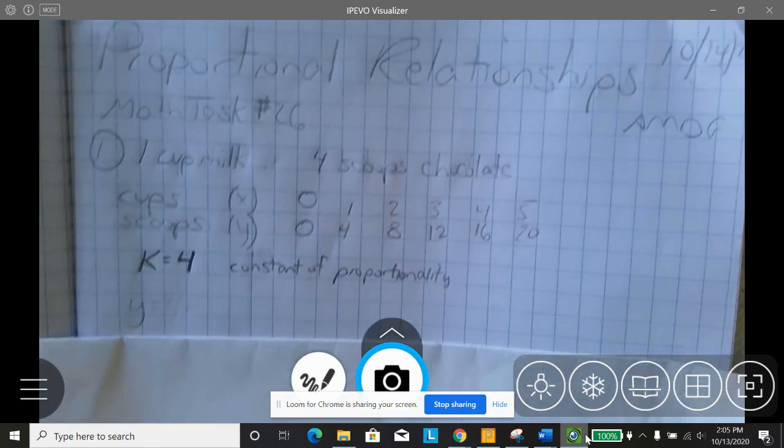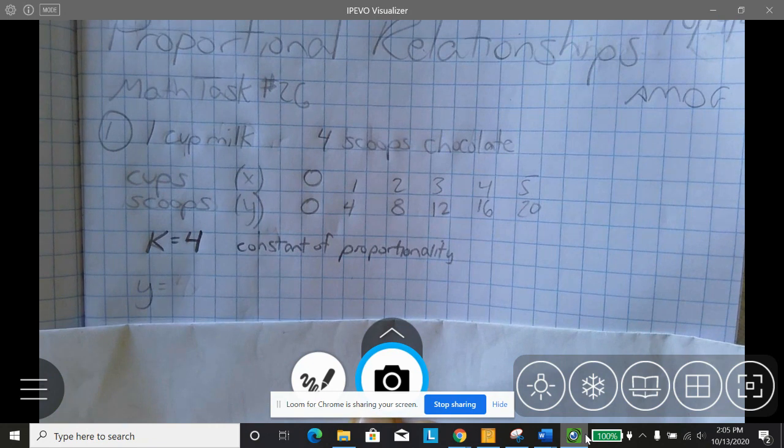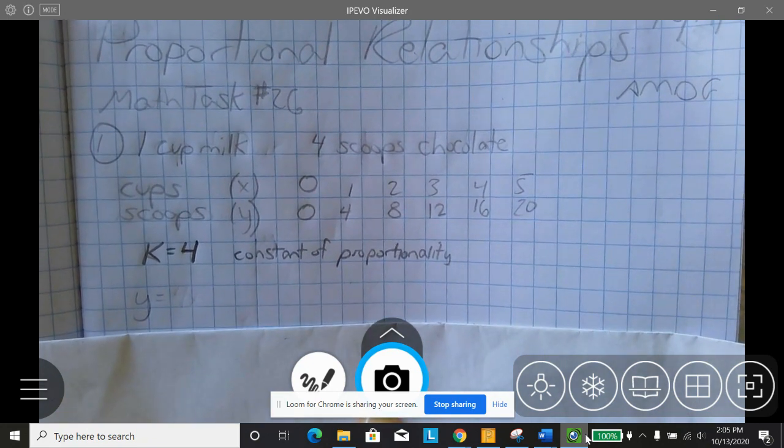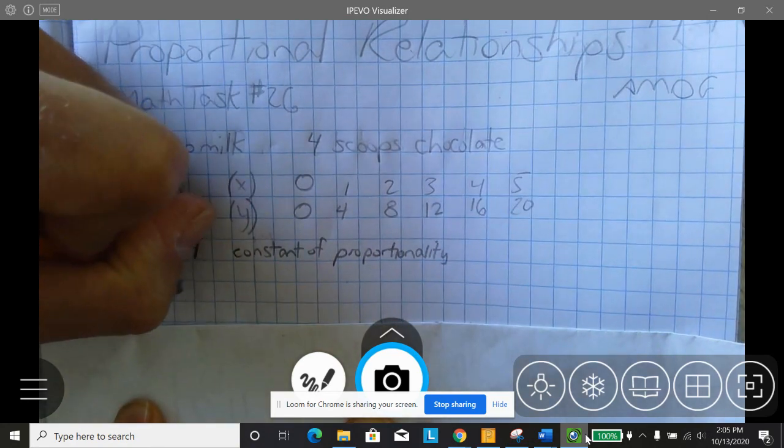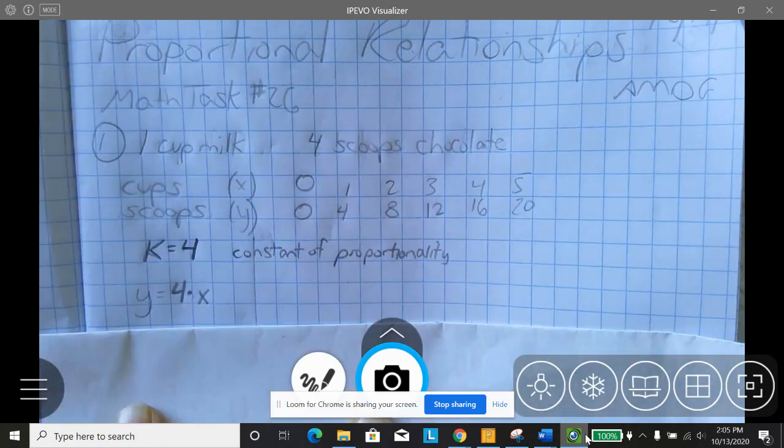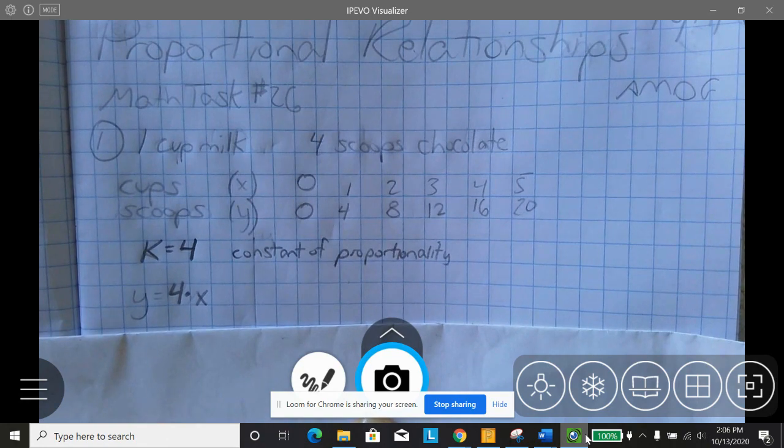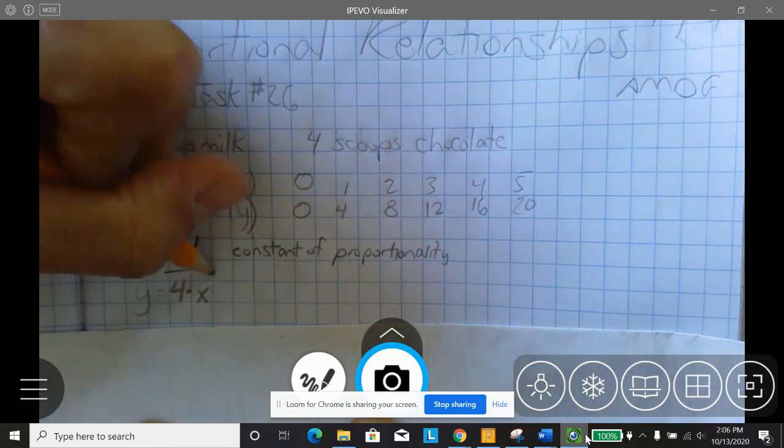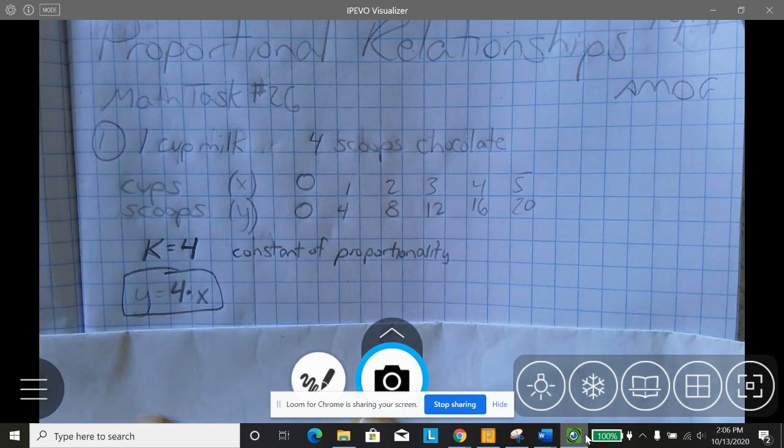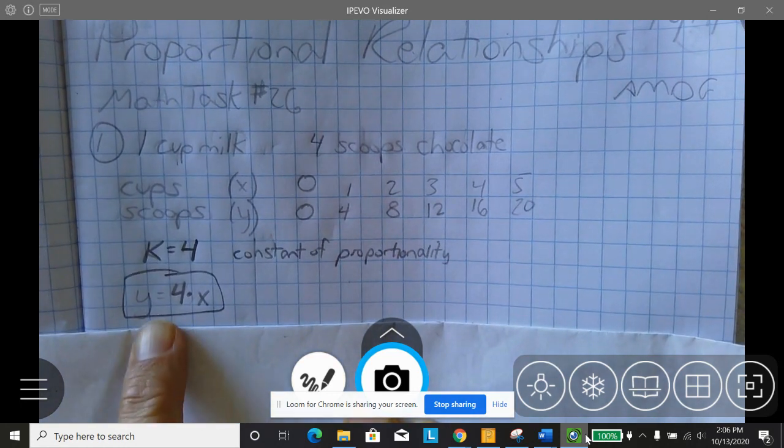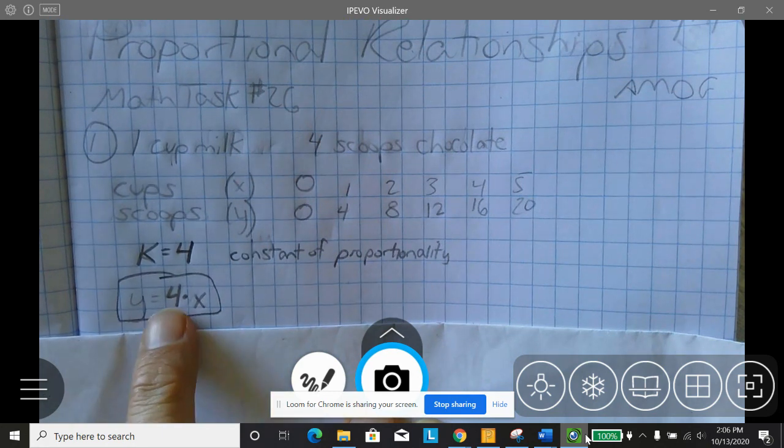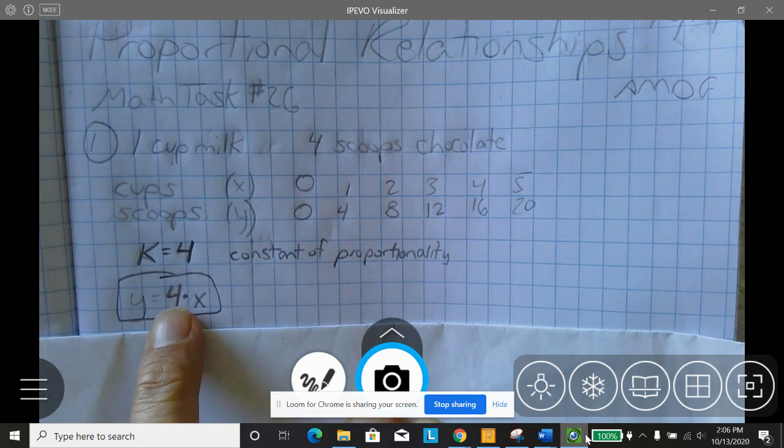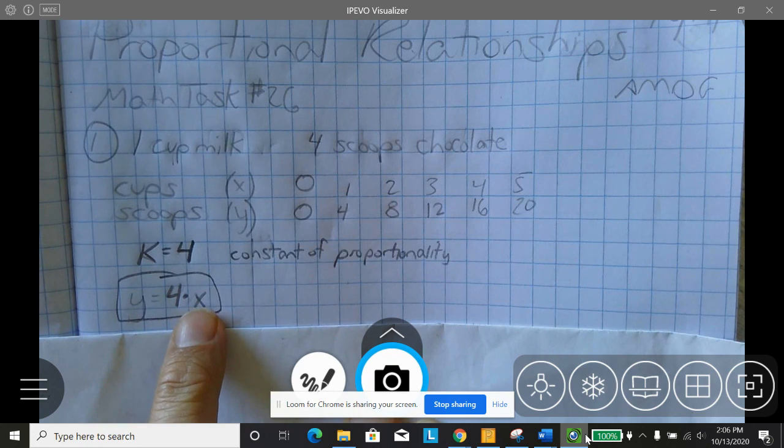Now, if I was going to create an equation out of this to generalize how many scoops I would need for every cup, y is the number of scoops. And what we said is you always take the constant of proportionality and multiply by the number of cups. So the general equation is y equals 4 times x. And that's how you write the equation of a proportion. You take the output, and that's going to be equivalent to the constant of proportionality times the input, which is x.